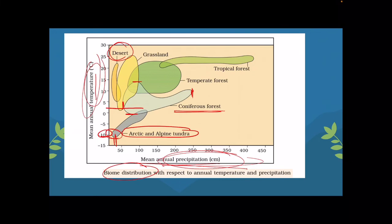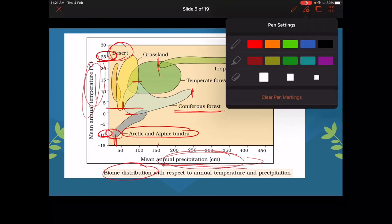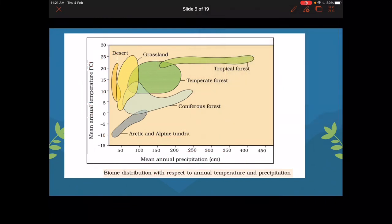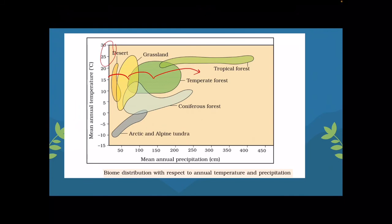Tropical forests have a huge amount of rainfall — from 150 centimeters onwards — and maximum temperature. You can clearly see the transitions in the diagram: desert to grassland, grassland to temperate forest, temperate forest to tropical forest. This diagram will help you fetch more marks in mains — if you can recreate it in your answer sheet, it is a great value addition.